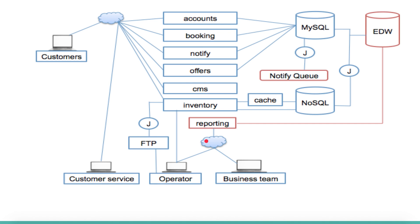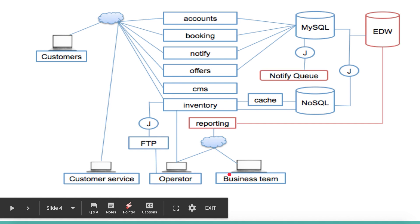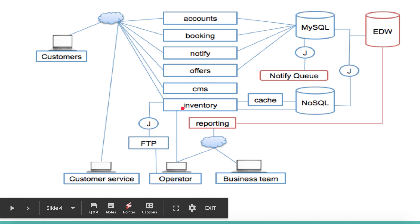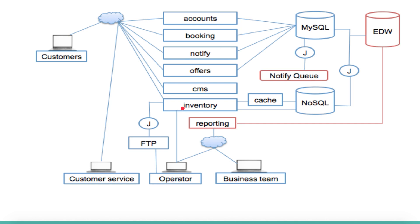The business team also interacts with the inventory APIs to make sure the right data is coming from operators and being utilized by customers. If they want to change frequency, remove a bus due to legal issues, or stop a particular service on a given day because it's not profitable, the business team can do that. The inventory system is accessed by multiple users and must be clean, efficient, and always have up-to-date data. Whatever is shown on screen must be accurate, and customers must have enough information to travel safely.